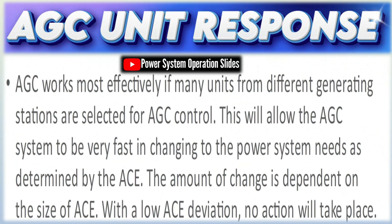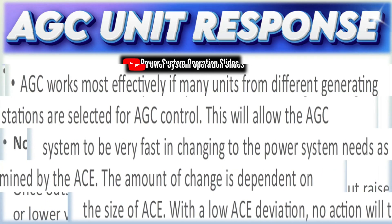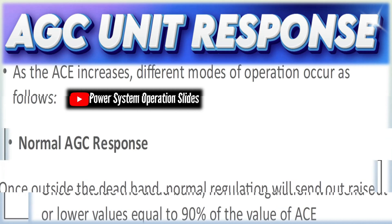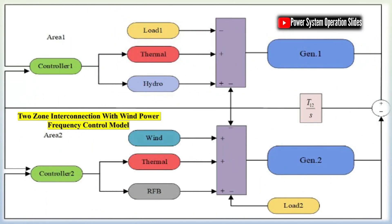The main functions integrated into AGC include: monitoring and tracking of frequency, generator output, and tie-line flows; error calculation using measured data to compute A.C.E.; control signal dispatch, sending commands typically through SCADA and digital control loops to generator governors; and feedback and tuning — continuously adjusting the gain and participation factors using methods such as proportional-integral control so that the control response is both prompt and smooth, minimizing overshoot or oscillations. These functions ensure that both fast transient disturbances and longer-term load changes are managed effectively.